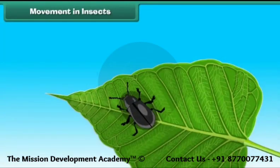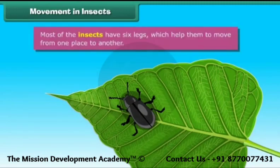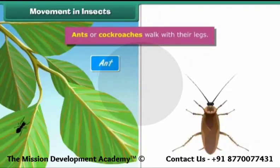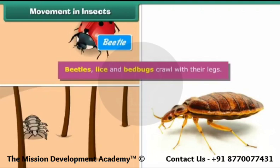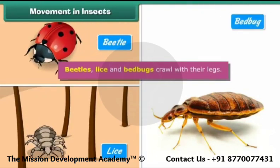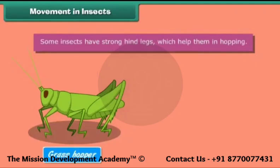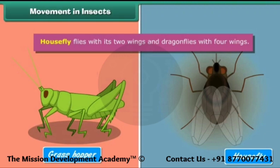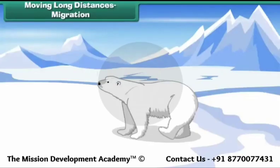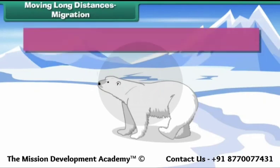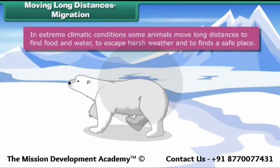Movement in insects: most insects have six legs which help them move from one place to another. Ants and cockroaches walk with their legs. Beetles, lice, and bed bugs crawl with their legs. Some insects have strong hind legs which help them in hopping. Many insects have wings and can therefore fly — the house fly flies with two wings and dragonflies with four wings.